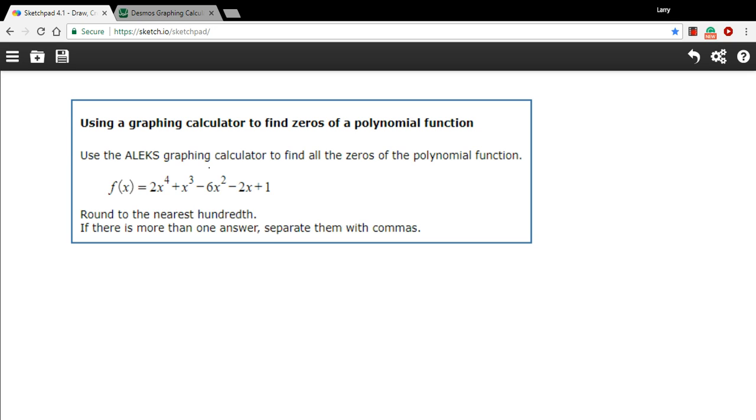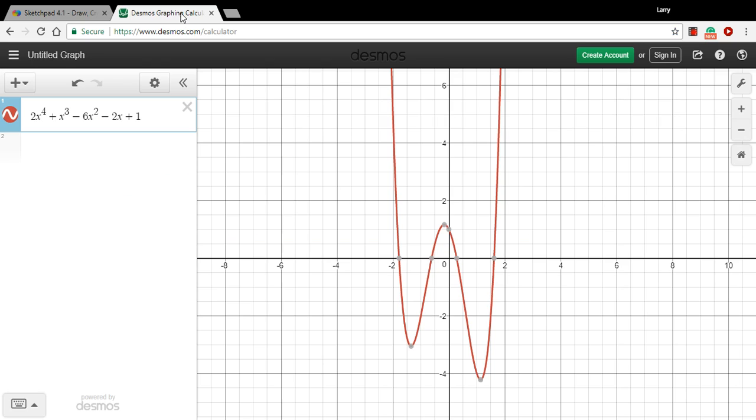All we have to do is type this function correctly into a graphing calculator. I think I've done that here. Yeah, so there is the function. And you can see this graphing calculator just plots the zeros for us already.